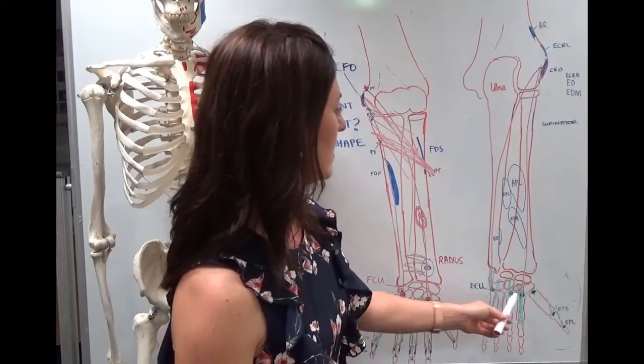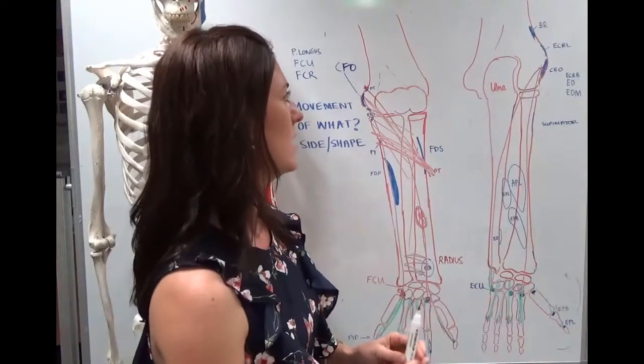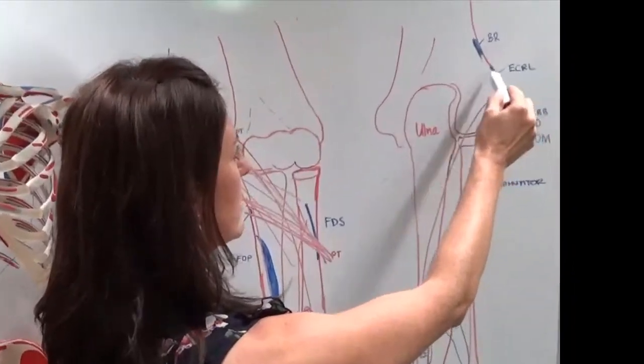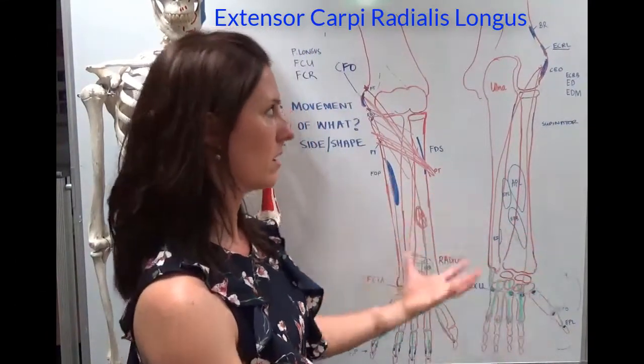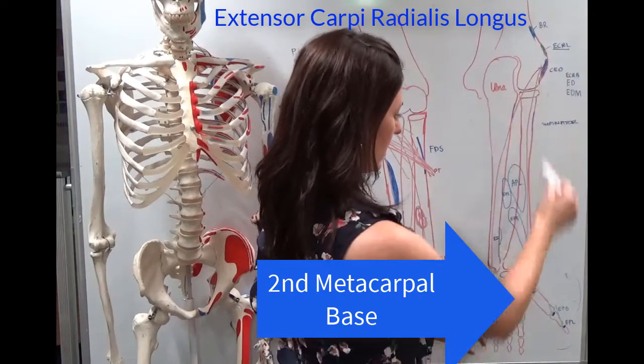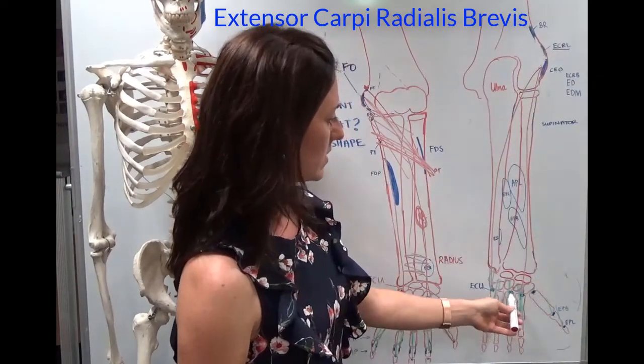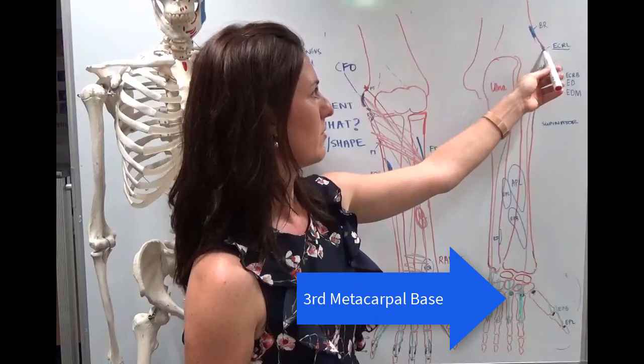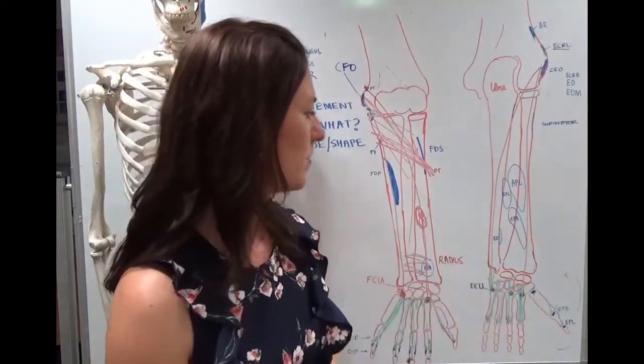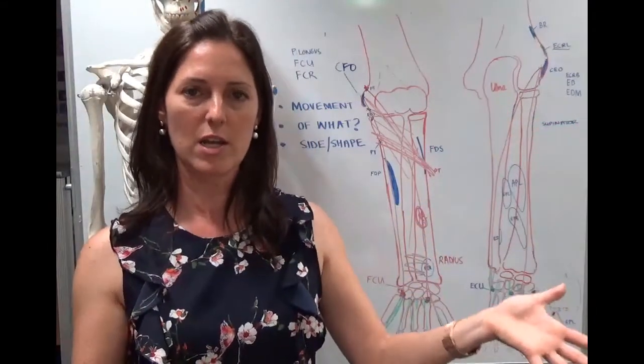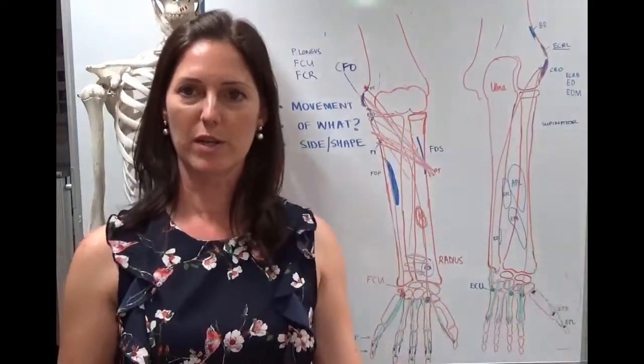So one other thing I need to mention is that the extensor carpi radialis, there's actually two of them. So originating just above the CEO is the extensor carpi radialis longus. It's longer, so we call it the longus. So it's going to go all the way from here down to here. So the extensor carpi radialis brevis inserts on the third metacarpal, the extensor carpi radialis longus inserts on the base of the second metacarpal. And one of the ways you can remember that is if you turn your hand into anatomical position, which is palms forward, down by your side, the brevis version is going to be closer to your backside.